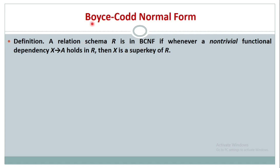We'll understand the definition of Boyce-Codd normal form. A relation schema R is in BCNF if whenever a non-trivial functional dependency — that is, X determines A — holds in R, then X is a super key of R. So whenever we have a non-trivial functional dependency, X should always be a super key.